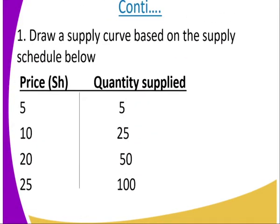Draw the supply curve based on the supply schedule below. We have the prices and quantity that was supplied. Price is 5, 10, 20 and 25. On the other side, the quantity supplied is 5, 25, 50 and 100 respectively.